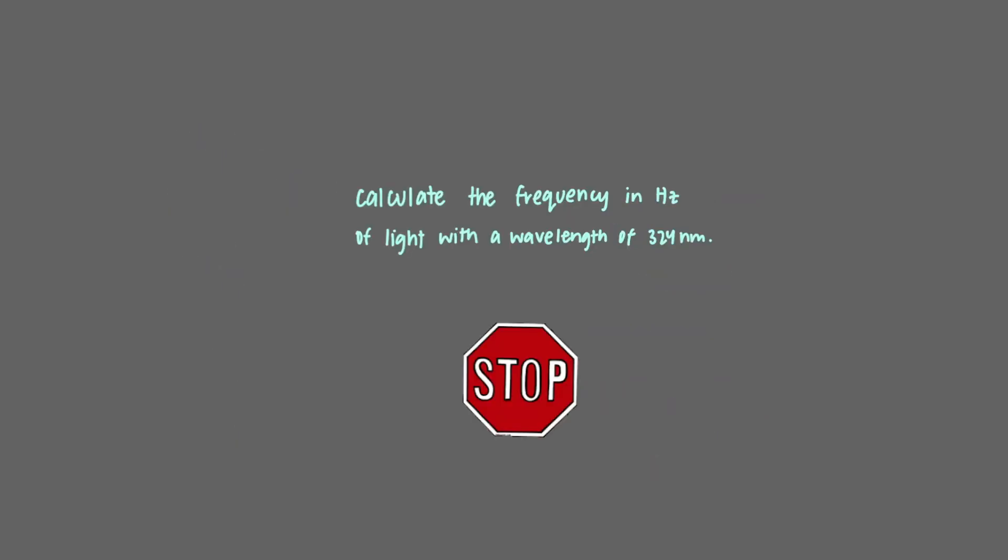Now, calculate the frequency in hertz of light with a wavelength of 324 nanometers. Here, we're doing the same thing we did for the last problem, except now we're given wavelength and we're asked to find the frequency in terms of hertz. Using our formula nu is equal to c over lambda, we can plug in our givens and solve for nu.